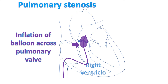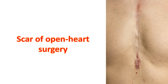The procedure is done under local anesthesia and there is no need to open up the chest. In the past, surgical pulmonary valvotomy was done by opening the chest under anesthesia. It is seldom done nowadays unless there are other associated birth defects which need repair by opening the heart.